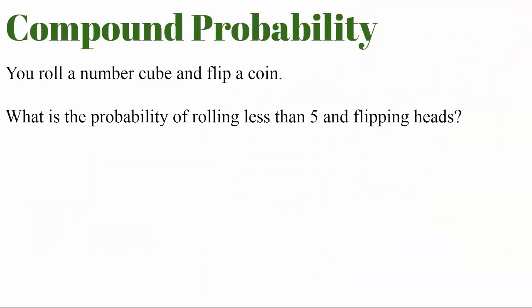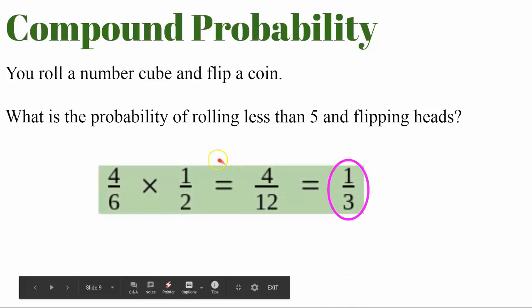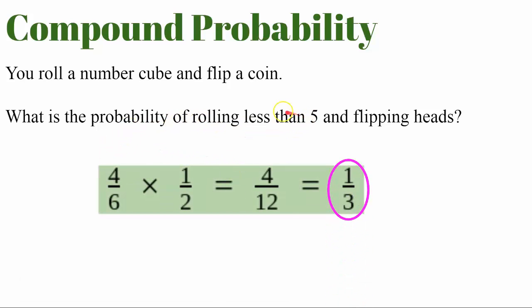Let's try another one. You roll a number cube and flip a coin. What is the probability of rolling less than five and flipping heads? Go ahead and pause the video. The first event is rolling less than five — four of the six sides have a number less than five, so the probability is four out of six. The probability of flipping heads is one out of two. Multiply: four times one is four, six times two is twelve, which simplifies to one out of three. So there's a one in three chance of rolling less than five and flipping heads.